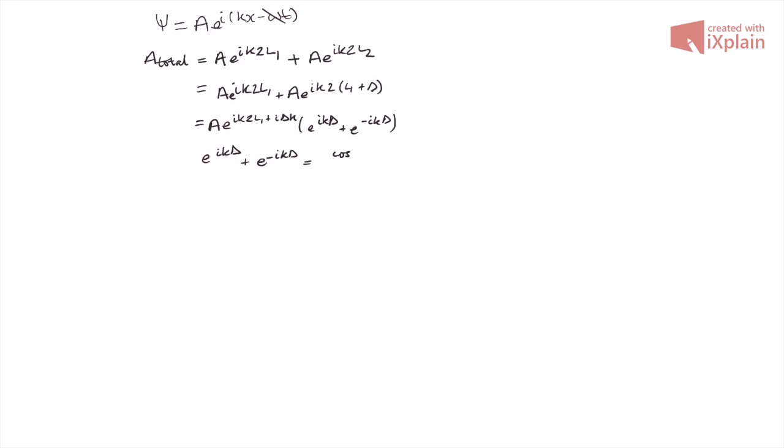Also, we can forget about the distances from the source to the beam splitter and the distance from the beam splitter to the detector, as both light waves travel along the path, so it wouldn't affect the phase difference between the waves.